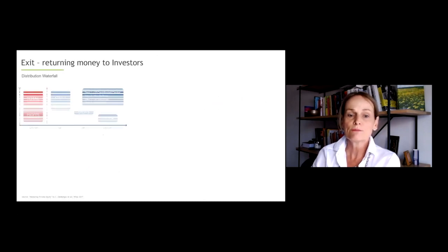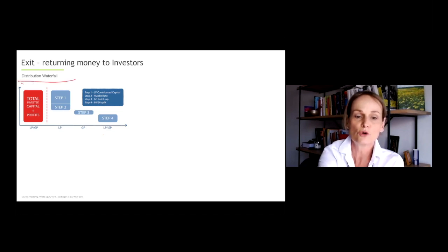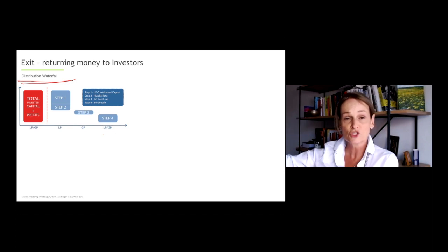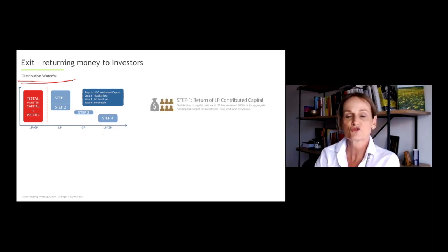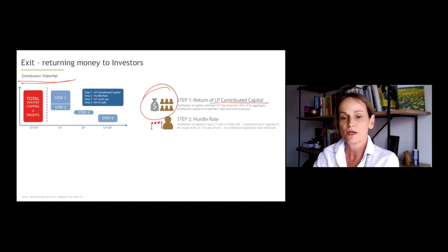So returning money to investors, when we talk about exits, we mentioned carry already, the profit share that goes to the GP. So how is basically the funding distributed? So number one, we have step one, we return basically, initially, out of all the profits and out of all the money returned after we sold a portfolio company, we will first return all the money to the LPs, the money that the LPs have invested in that specific deal.